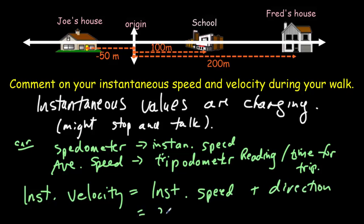If I say 20 meters per second, that would be a speed. But if I say 20 meters per second east, that becomes a velocity.